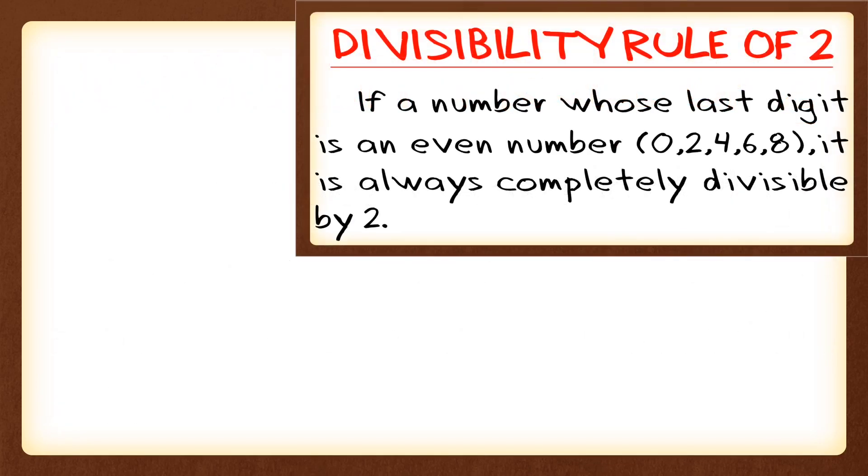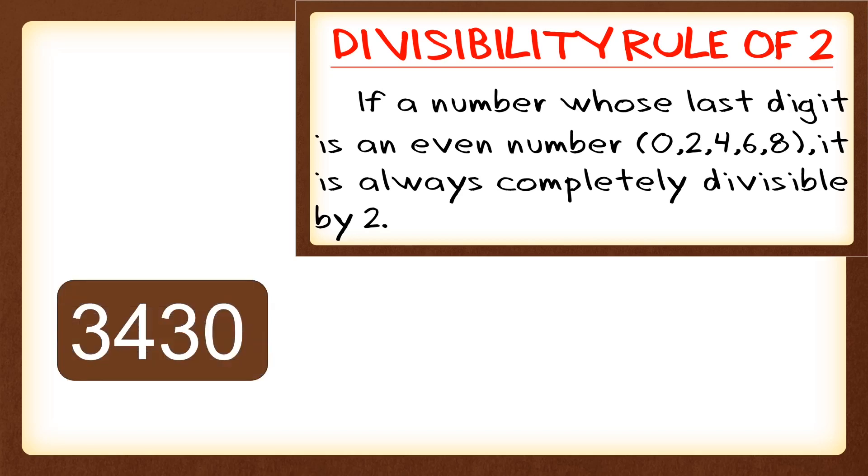So I'll just post the divisibility rule of 2 so that we can easily answer or determine if the number is divisible by 2 or not. 3,430. So stated on the divisibility rule of 2, we're just going to look at the last digit.